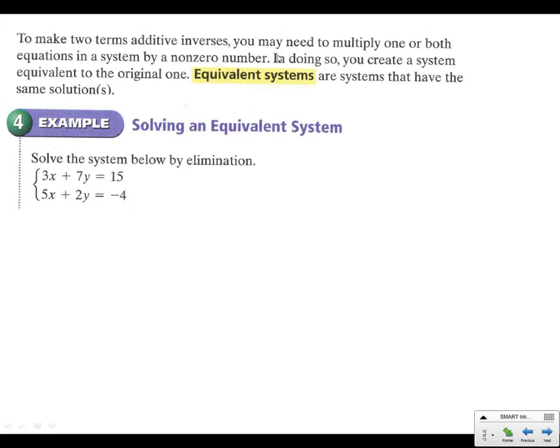Example 4. We're going to start dealing with equivalent systems where we have the same solution here. By negative 7. So by doing so, I'd have 6X plus 14Y equals, and here's where people always forget to multiply the last one, equals 30. And then I've got negative 35X minus 14Y. So there's our additive inverse there. The Y's, same exact number, but one's a positive, one's a negative. And this is 28.